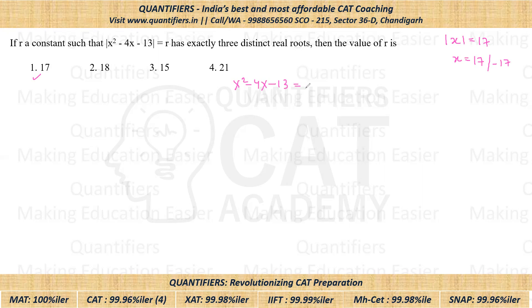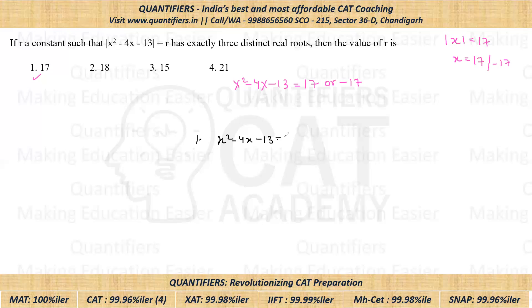So what I'll do is I'll solve it for the first case. If we take the first case, that x² - 4x - 13 is equal to 17. So in this case, we'll be getting x² - 4x - 30 is equal to 0.